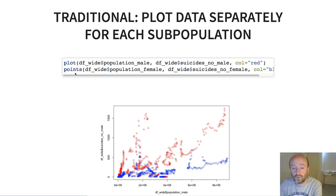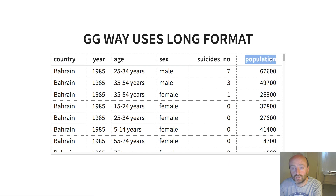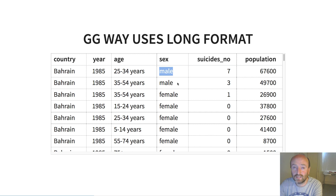The grammar of graphics way instead uses the long format of the data. Here I have a single column for sex, a single column for the count of suicides, and a single column for population size. Sex just designates whether a row pertains to males or females. It's the same data but in the long format — called long because the data set now has more rows than the wide format.